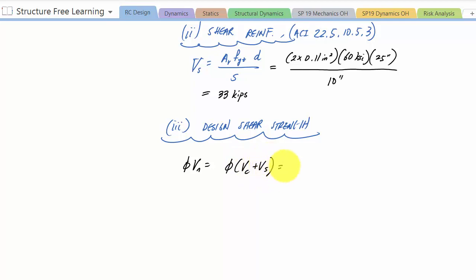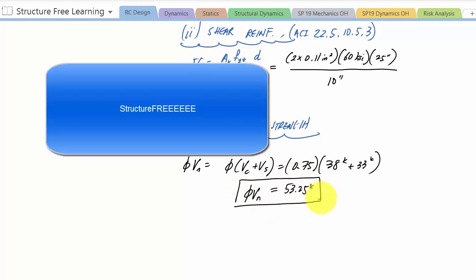And phi is always 0.75 for shear in the ACI code. And here Vc would be 38 kips plus 33 kips times 0.75, which gives me 53.25 kips. So at this location my design shear strength is 53.25 kips, and that's it.